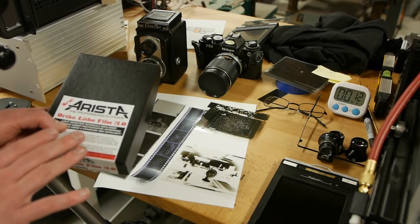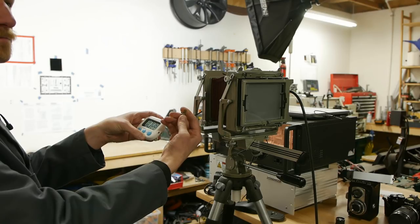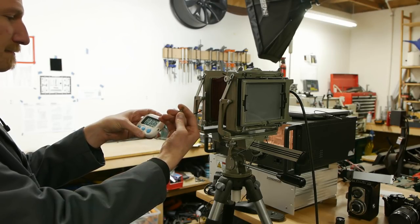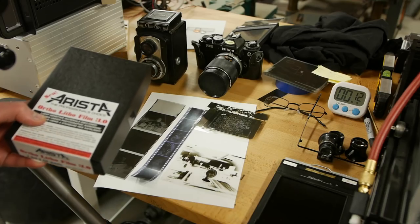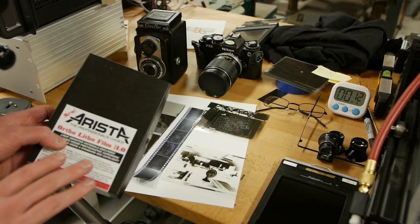This is about two ISO. So the exposures are very long, even in the studio with proper lighting, the exposures are going to be on the order of 10 to 30 seconds. So not a huge deal, but you can't use this to take pictures of things that move.